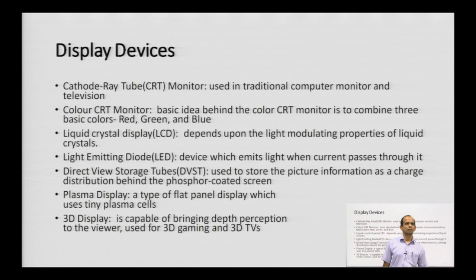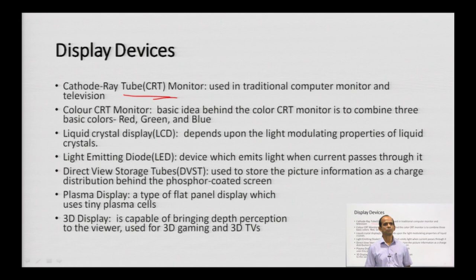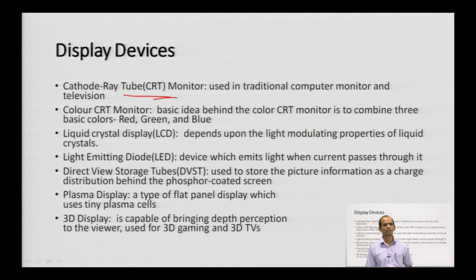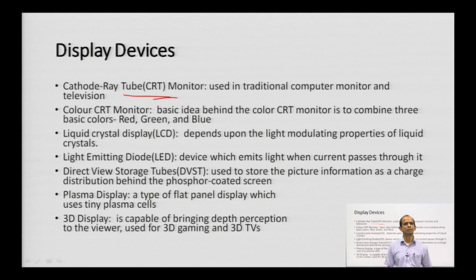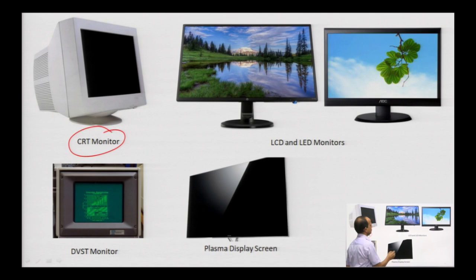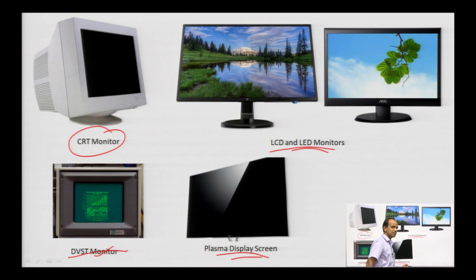Display devices include: the Cathode Ray Tube (CRT) monitor used in traditional computers; color CRT monitors; Liquid Crystal Display (LCD) screens; and LED screens used today. There are also Direct View Storage Tubes (DVST), which store picture information as a charge distribution behind a phosphor-coated screen. Plasma displays are a type of flat panel using tiny plasma cells. 3D displays bring depth perception to the viewer and are used in 3D gaming and 3D TVs.